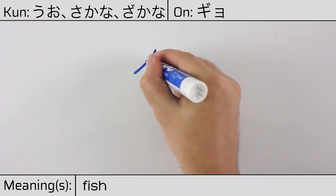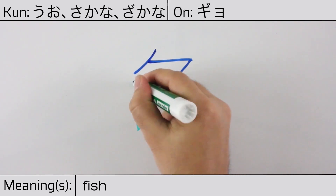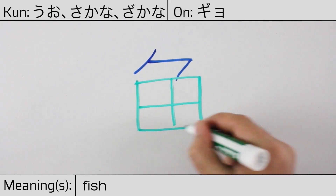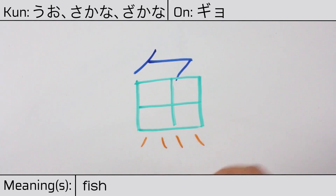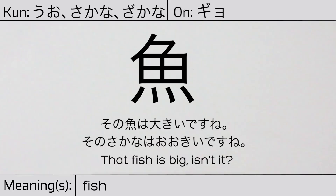This character is made up of the following radicals or parts: a hook part at the top, followed by rice paddy or field, and finished with four dots at the bottom. You can remember this kanji by the fact that it looks like a fish on a fish hook. Our example sentence is: その魚は大きいですね — That fish is big, isn't it?